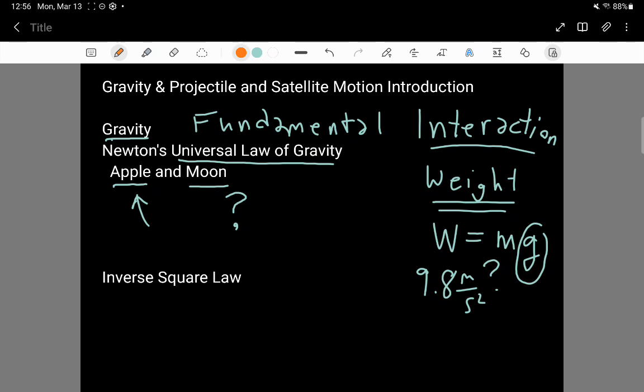And what he realizes, and this is very interesting, is they must have the same origin. Both of those things happening. The apple falling to the ground is often referred to as a projectile motion, although the apple hasn't been projected, it's just been dropped. And the moon going around the earth is going around in an orbit of a particular shape. That shape is called elliptical. And Isaac Newton's realization is they must be the same issue. The apple falling and the moon going around in orbit.